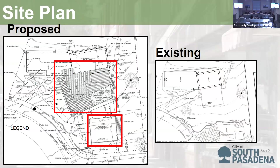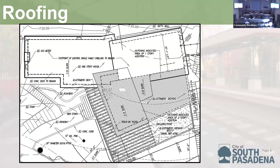We'll begin with the site plan. The red box indicates the majority of the proposed work, which includes the new garage facing Indiana Place, the new deck, the new first and second story addition, and trellis. To the right, shown in dashed lines, is the existing deck proposed to be demolished as part of the proposal. The roof plan shows the roof styles will be sloped and will be matching the existing roof slope.